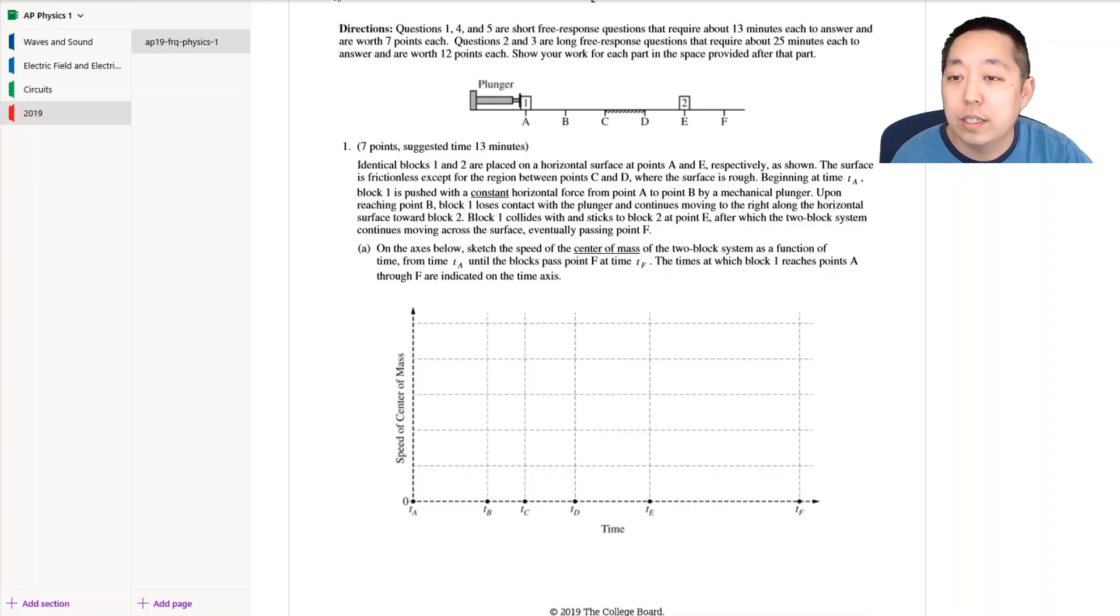So I haven't looked at these yet. Identical blocks one and two are placed on a horizontal surface at points A and E respectively as shown. The surface is frictionless except for the region between points C and D where the surface is rough. Beginning at time TA, block one is pushed with a constant horizontal force from point A to B by mechanical plunger. Upon reaching point B, block one loses contact with the plunger and continues moving to the right along the horizontal surface towards block two. Block one collides and sticks to block two at point E, after which the two block system continues moving across the surface eventually passing point F.